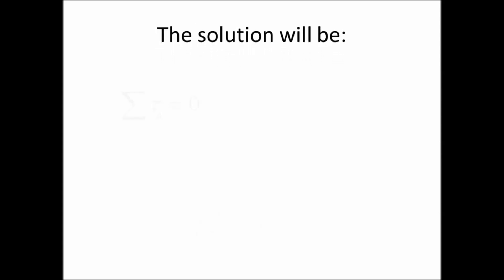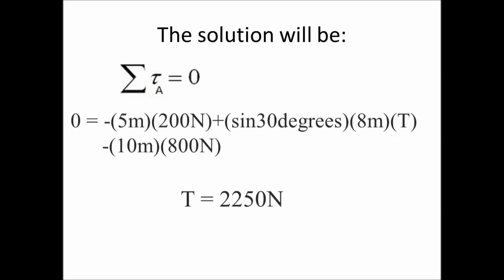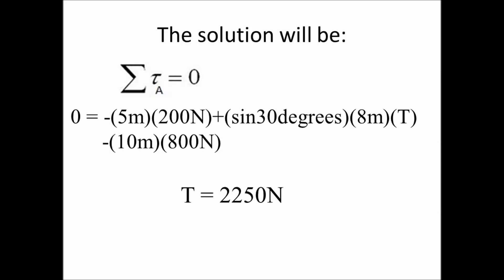Summation of torque at point A is equal to zero. Zero is equal to torques of all the object acting on the beam with respect to point A. T is the variable for the unknown tension. T will now be equal to 2250 Newtons.